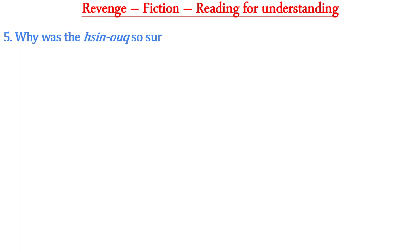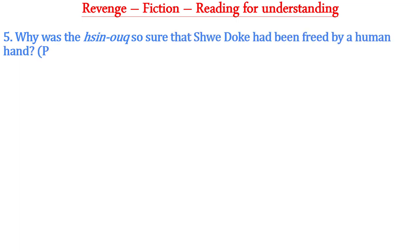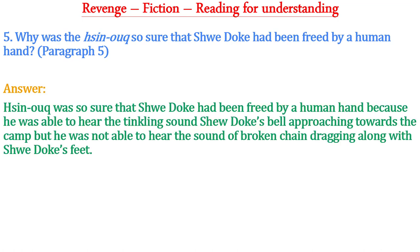Question five: Why was the Shin Hawk so sure that Shuidok had been freed by a human hand? This question is from paragraph five. The answer is: Shin Hawk was so sure that Shuidok had been freed by a human hand because he was able to hear the tinkling sound of Shuidok's bell approaching towards the camp, but he was not able to hear the sound of broken chain dragging along with Shuidok's feet.